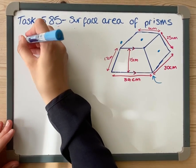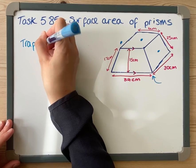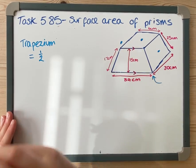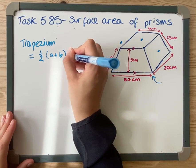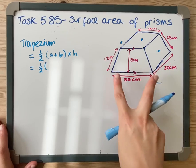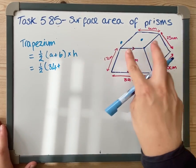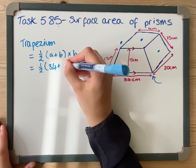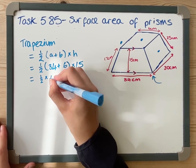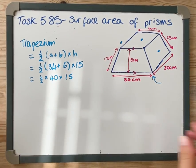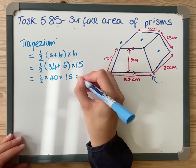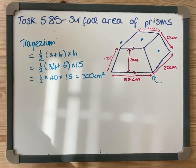I'm going to start with the trapezium, and I know there are two of them. Remember, the formula for a trapezium is half the sum of the parallel sides times the height between them. So we've got half, the parallel sides in this trapezium are 34 and 6, and the height between them is 15. So we've got a half times 40 times 15, which is 300 centimeters squared.